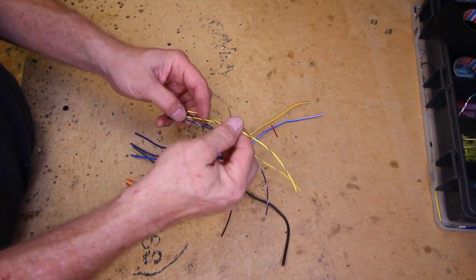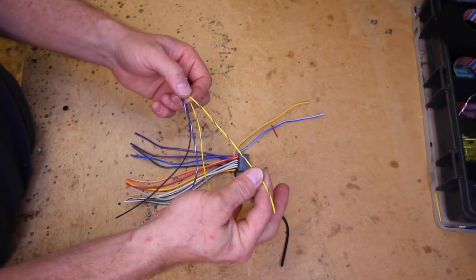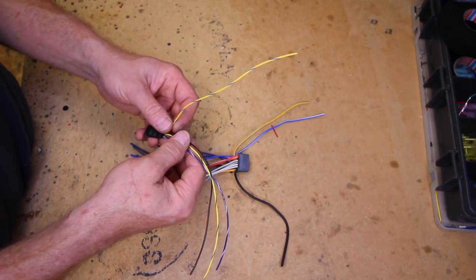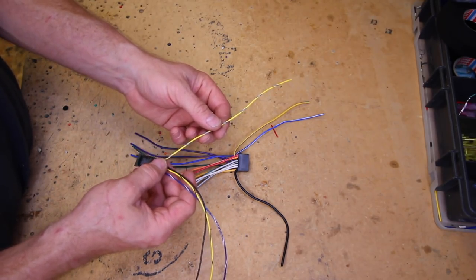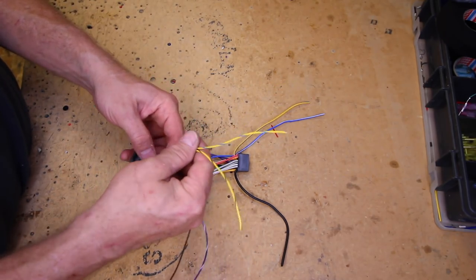Basically the difference between the two is the old Alpines are going to have a yellow black wire, whereas the new Alpines are just going to have the yellow blue wire, instead of both yellow black and yellow blue.